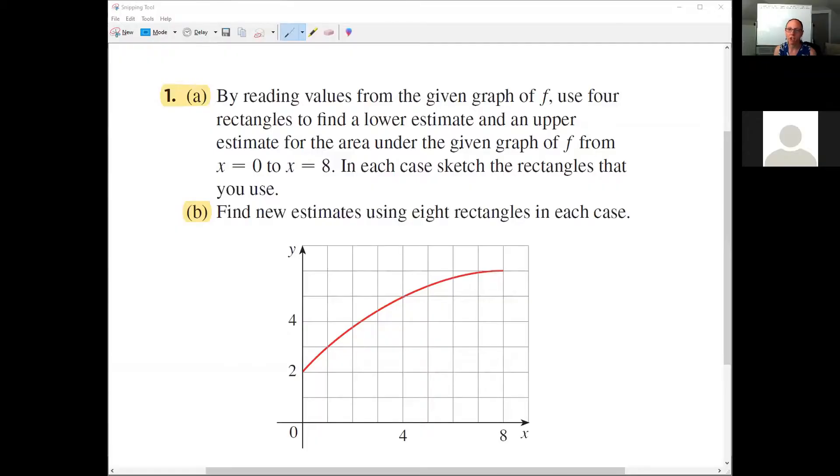By reading values from the given graph of f, use four rectangles to find a lower estimate and an upper estimate for the area under the curve from zero to eight. I'm going to attempt to draw on the screen. The first thing is to figure out how many rectangles - we've been told four rectangles. That means if the width here is zero to eight, then I know that our delta x is going to be eight minus zero all over four because of the four rectangles.